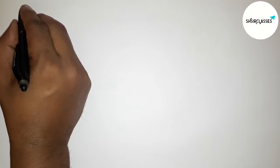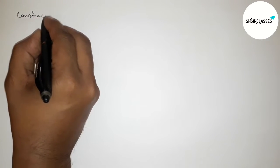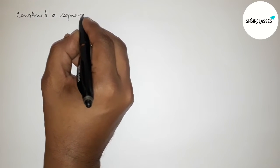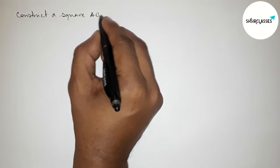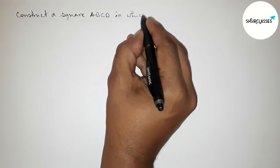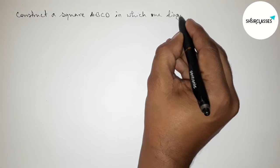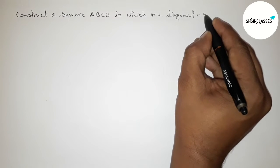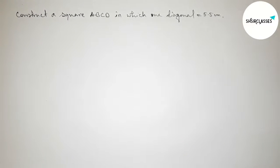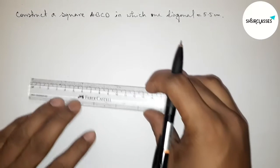Hi everyone, welcome to SSR Classes. Today in this video we have to construct a square ABCD in which one diagonal equals 5.5 centimeters. Please watch the video till the end. Let's start.